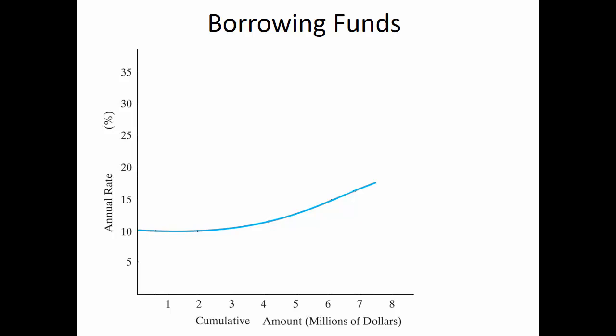Here's a really important figure I've simplified from your textbook. This first curve shows on the horizontal axis the cumulative amount of money a company has borrowed from a lending institution, and on the vertical axis the interest rate they have to pay for the privilege of borrowing. So when they borrow a million dollars from the bank, the bank requires 10% interest.